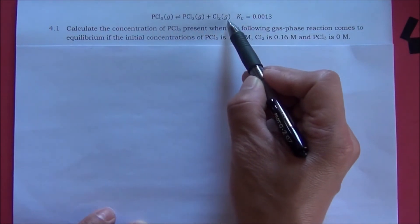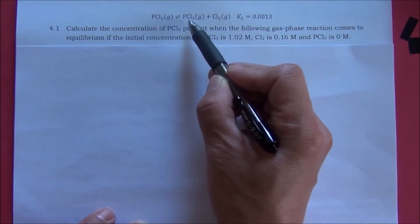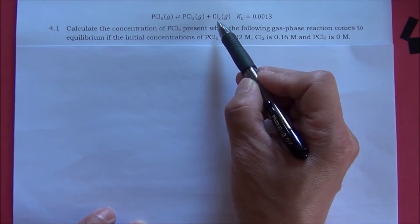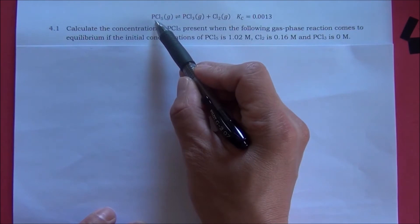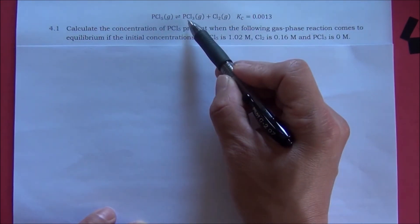This is the chemical equation. It has one reactant and two products. When you set up an ICE table, each reactant requires a column. Each product requires a column.